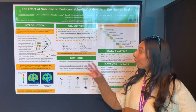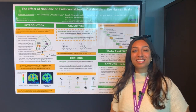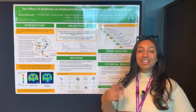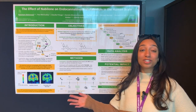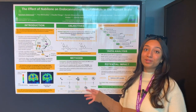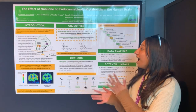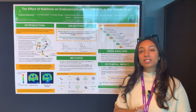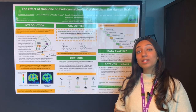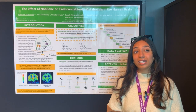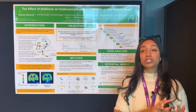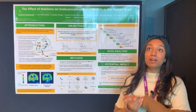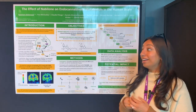I won't bore you with my introduction because over the last couple of days we've really heard a lot about the harms and benefits of cannabis and its derivatives and their effect on the endocannabinoid system. So I'll jump right into my rationale. Basically, there's very little known about how exogenous cannabinoids affect the endocannabinoid system, and particularly very few studies have looked at how exogenous cannabinoids affect FAAH — fatty acid amide hydrolase — which is the key enzyme responsible for degrading anandamide.